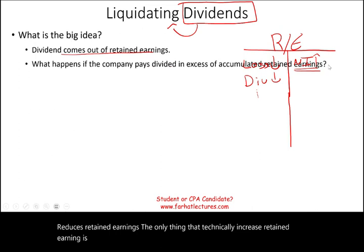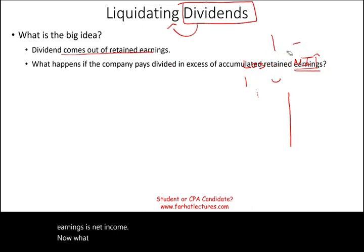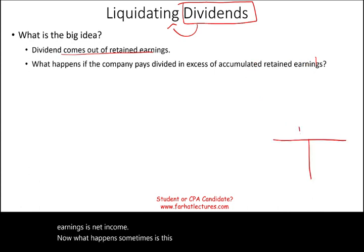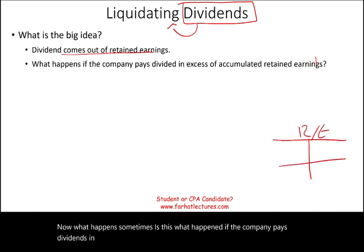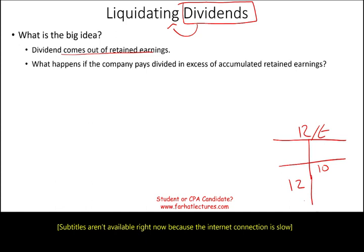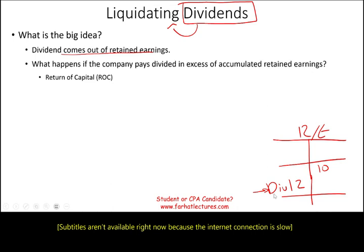What happens if the company pays dividend in excess of accumulated earnings? Simply put, over the years we have this account called retained earnings and we have $10 in here in total. What happens if we decided to pay $12 in dividend? Remember, dividend reduces retained earnings. Under those circumstances, technically this is not a dividend.